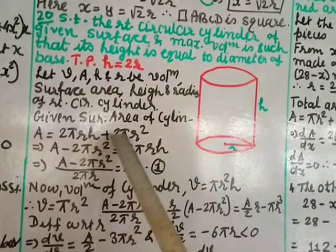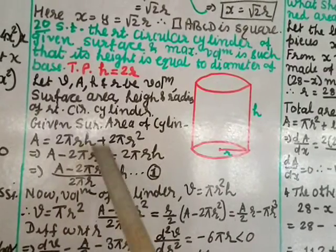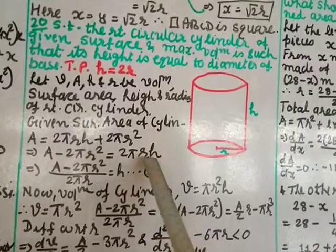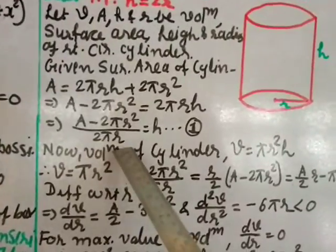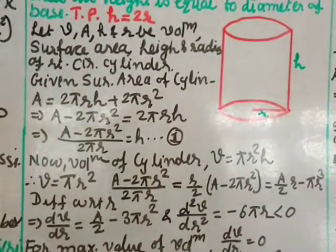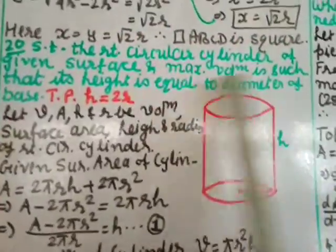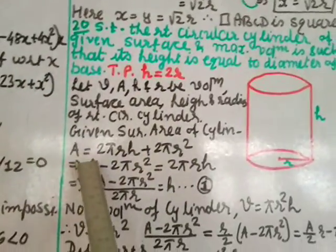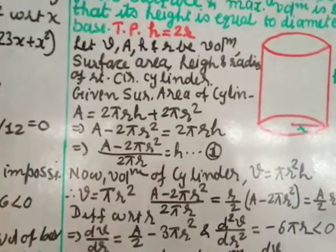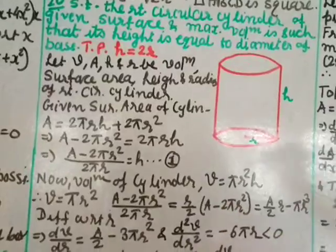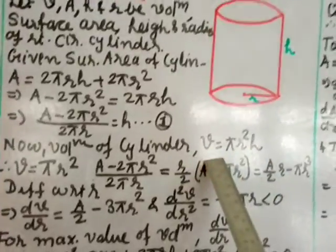The surface area formula is A = 2πrh + 2πr squared. Rearranging to express h: A minus 2πr squared = 2πrh, so h = (A minus 2πr squared) divided by 2πr. Call this equation 1. Surface area is given as constant (fixed), and we need to maximize volume.